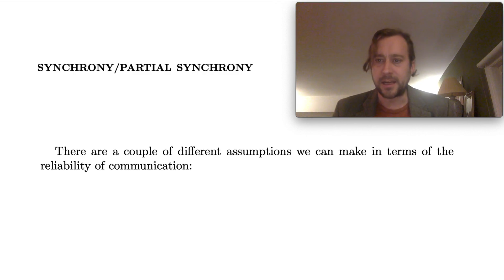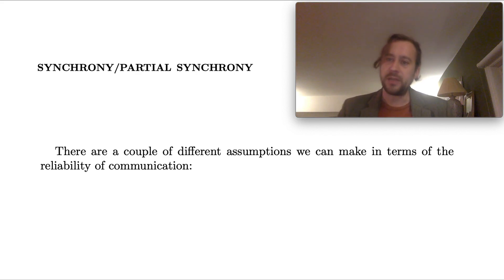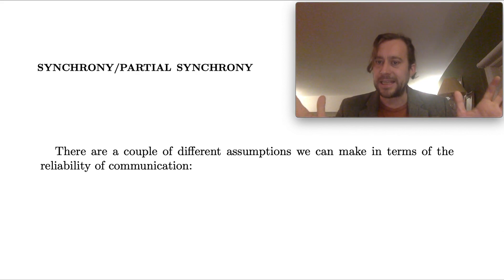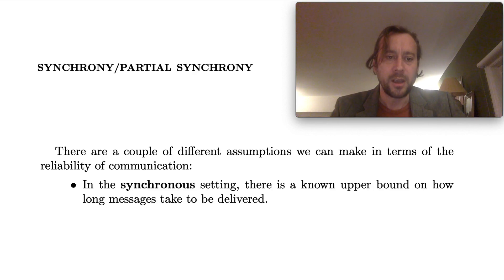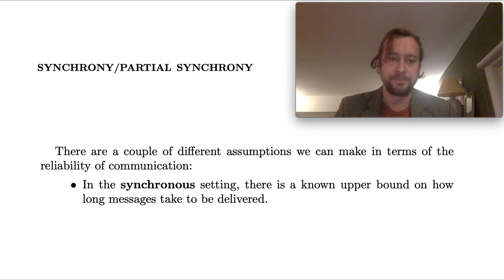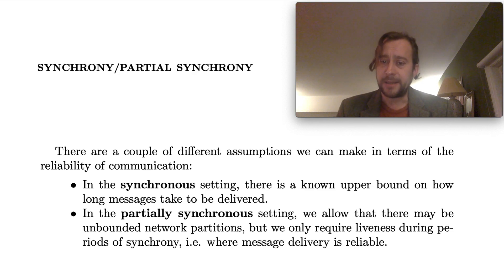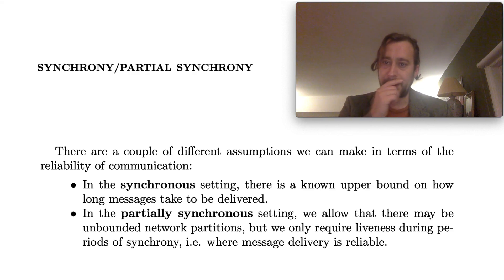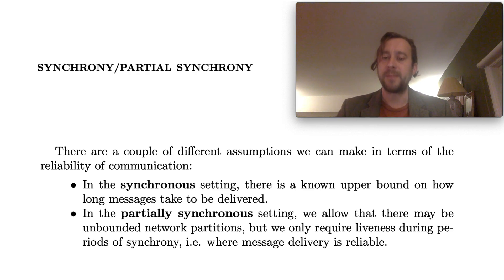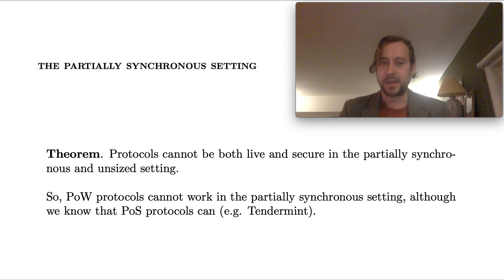We're almost ready to state our results, we just need a couple more basic definitions concerning the reliability of communication. In the synchronous setting, we assume there's a known upper bound on how long messages take to be delivered. In the partially synchronous setting, we allow that there might be unbounded network partitions, during which time messages may take any amount of time to be delivered. This upper bound doesn't always apply, and we only require liveness during sufficiently long periods of synchrony, i.e., when message delivery is reliable.